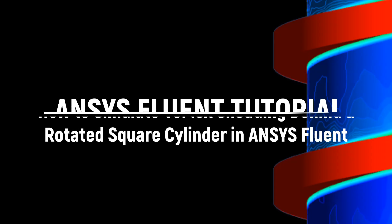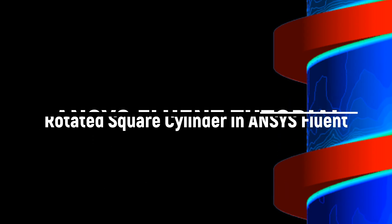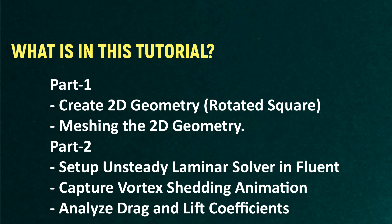Hello friends, welcome to ANSYS Tutor. In this tutorial we are going to simulate vortex shedding behind a rotated square cylinder in ANSYS Fluent. We will learn how to create the 2D geometry — a rotated square of 24 degrees — mesh this geometry using the face splitting method, set up the unsteady transient solver in Fluent for laminar flow, capture the vortex shedding using animations, and analyze the drag and lift on the rotated square.